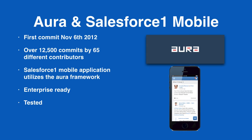Salesforce went away and built the Aura framework, and it's available for you to download and use. It powers the Lightning component system and also the Salesforce One mobile application. The Salesforce One mobile app is actually a series of different components: we have the hamburger component in the top left, the notifications component in the top right, and a series of different mobile cards. This has been in production for over 18 months and is live and in use by millions of people around the world, so you know it's a tested, enterprise-ready framework.